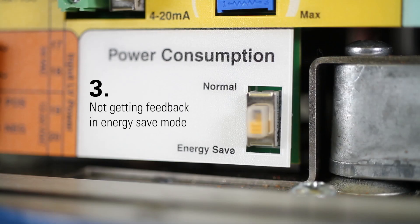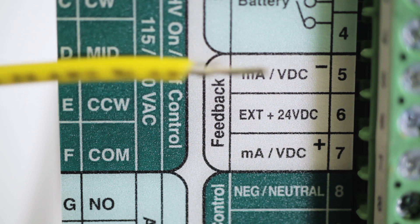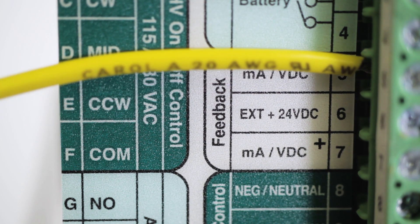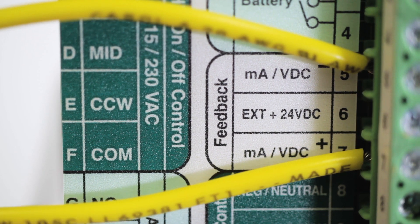If you're not getting feedback in energy save mode, the feedback wires may have been removed from the terminal block. If this happens, even briefly, the feedback signal is turned off. To correct this, ensure the wires are connected and then cycle power to reinstate feedback signal.